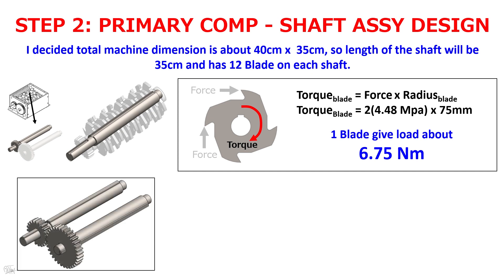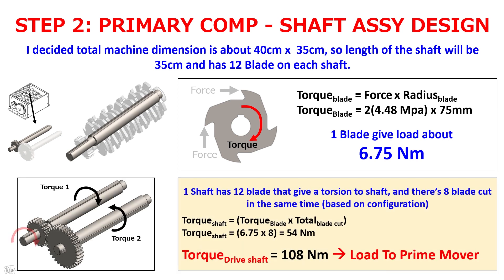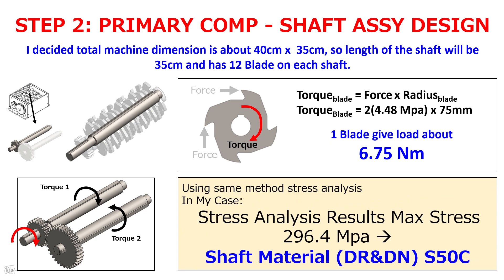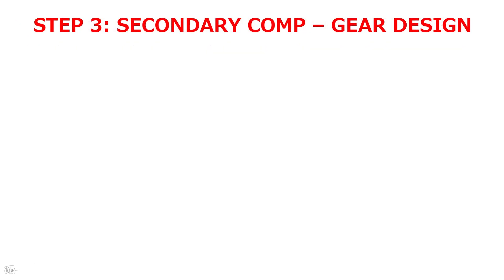One shaft has 12 blades that give torsion to the shaft, and there are 8 blades cutting at the same time based on the blade configuration. So the total torsional load on two shafts is about 108 newton-meters, and this will be the load to the prime mover. Using the same stress analysis method, I got the max stress of about 296.4 megapascals, so I use S50C for the shaft material.